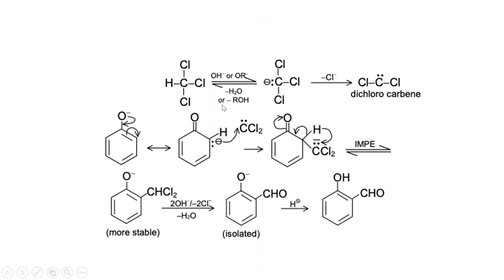Now we are discussing the mechanism of the Reimer-Tiemann reaction. Starting with CCl3, which is chloroform. In the presence of OH- or OR-, OH reacts with CCl3 and removal of H2O happens. If OR- is present, then ROH is formed and removed. After the elimination of water or ROH, CCl3- is formed, which is very unstable, and Cl- is removed.